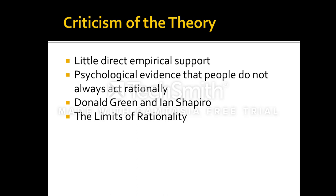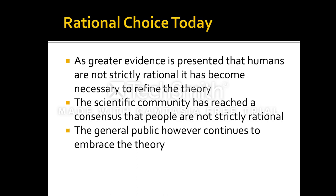There was a lot of support for this theory by the 1980s with the get-tough approach to crime. We see support from individuals like Derek Cornish and Ronald Clarke. However, there was little empirical support that people are truly that rational, and psychologically the evidence is pretty decisive that people are not — they don't always act rationally. Scientists like Donald Green and Ian Shapiro, and famously the publication of The Limits of Rationality, really brought into serious question whether Beccaria's theories and their application are true.